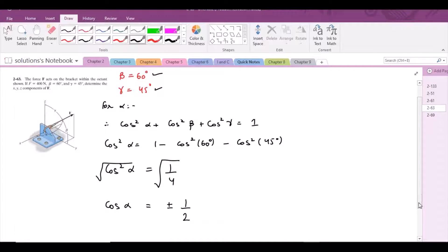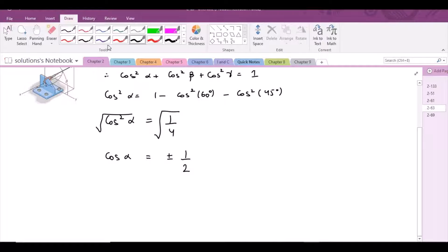I'm going to end up with two alphas. When cos α is positive 1/2, then if you take the cos inverse, alpha would be 60 degrees.